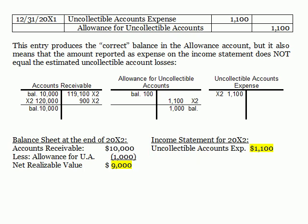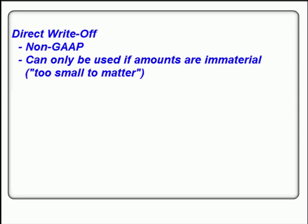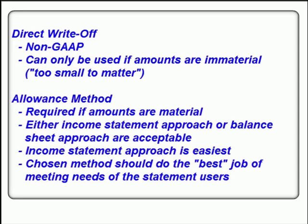Which of all these methods and approaches should the company use? Because direct write-off violates the matching principle, a company could only use it when it has a very small amount of receivables and account write-offs. In that case, the principle of materiality will apply, and the company can justify use of the direct write-off method based on materiality. If the amount of receivables and write-offs is not immaterially small, then the company will have to use the allowance method. Either the income statement approach or the balance sheet approach is acceptable, and the company will decide which best serves the needs of financial statement users. Once a choice has been made, the company should apply it consistently, in keeping with the accounting principle of consistency.